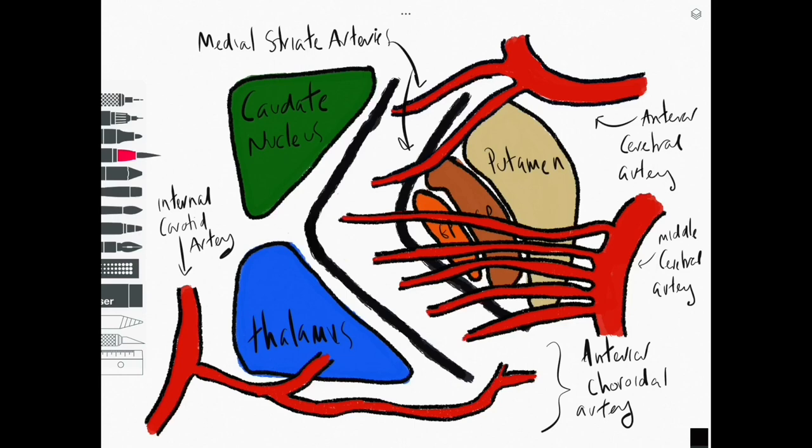Now these supply the component of the internal capsule which is the posterior limb and the posterior limb contains the motor fibres and it's the motor fibres that are considered to be most important in stroke because of course they lead to paralysis.